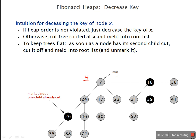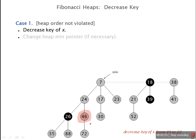Suppose this is a Fibonacci heap where min of H is pointing to 7. The nodes 26, 18, and 39 are the marked nodes. If we want to decrease the value of 46 to 29, the parent of X does not violate the min-heap property, so there is no change in the heap. Whenever you decrease the value of X and it does not affect the min-heap property, just decrease it and finish.